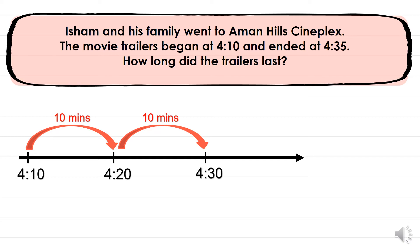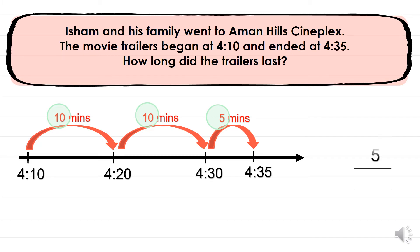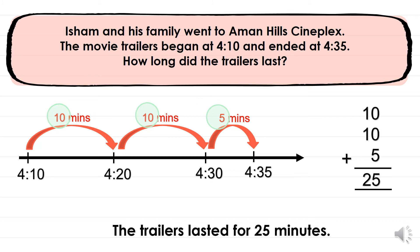I'm still not at 4:35 yet, so I have to skip again. But now, instead of jumping 10 minutes, I have to just go by 5, because there's only 5 minutes left to get to 4:35. So now we can stop our skipping on the number line. To figure out how long the trailers lasted, we add all the times we skipped by: 10 plus 10 is 20, plus 5 is 25. The trailers lasted for 25 minutes.